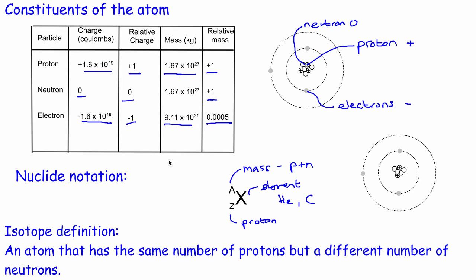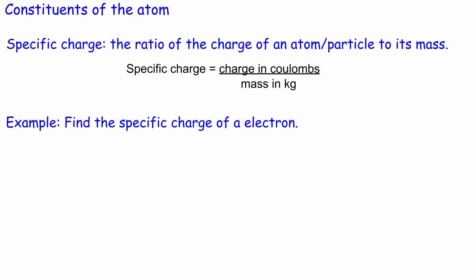Now we're going to look at something new — something called the specific charge. The specific charge is simply the ratio of the charge of an atom, nucleus, or particle to its mass. If you want to calculate the specific charge, you take the charge in coulombs — not the relative charge — and divide it by the mass in kilograms. The unit for specific charge is therefore coulombs per kilogram.